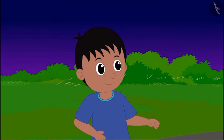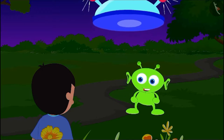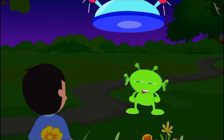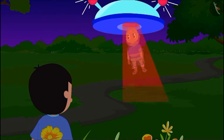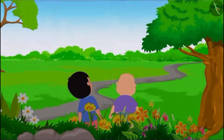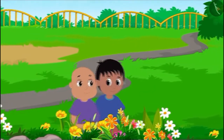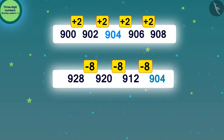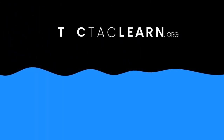Raju is very happy to get the correct answer. He quickly answered the alien, who said: 'You have given the correct answers to all three codes — I am returning your friend to you.' Bablu came down from the flying saucer, and it flew far away. Raju and Bablu happily went home. Children, we hope this lesson has helped you understand number patterns made with three-digit numbers.